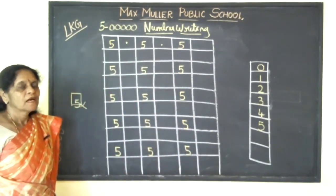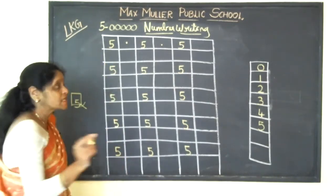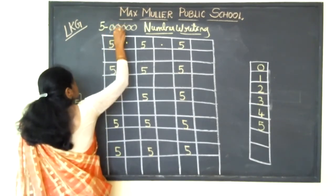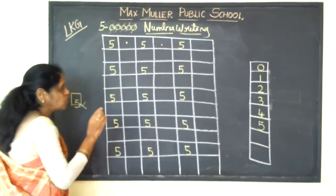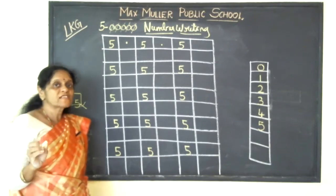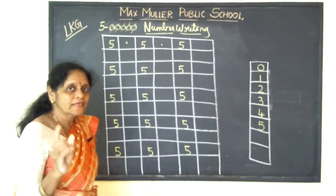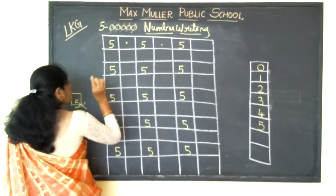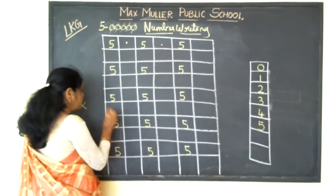Again I will repeat, children. How many circles are there? Five circles. One circle, two circles, three circles, four circles, five circles. Now you have to write this number five in your classwork. Okay children, write this in your classwork. In homework I will be giving you another number. Okay, five five five. Open your mouth and say with me — five, five.